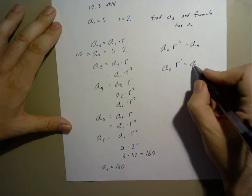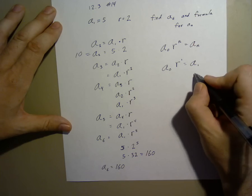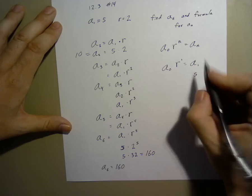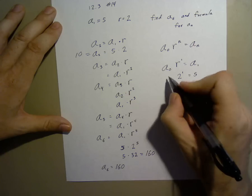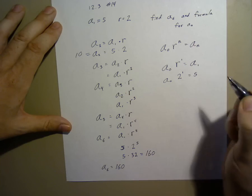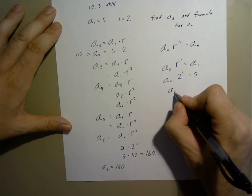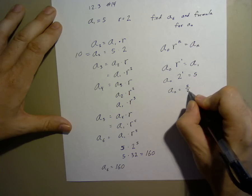Since we know what a1 is, that's 5. 5 equals r to the 1, which is 2 to the 1st power times a0, and a0 becomes 5 over 2.